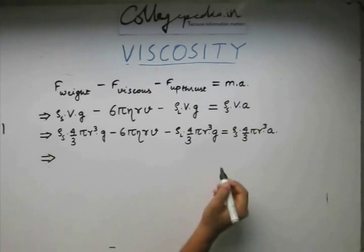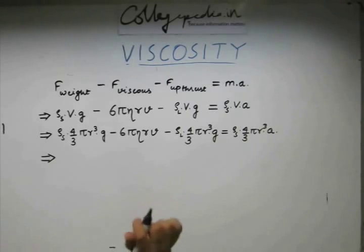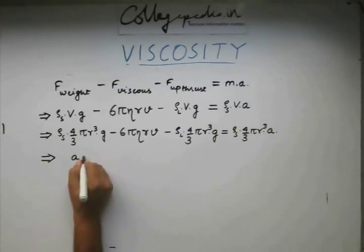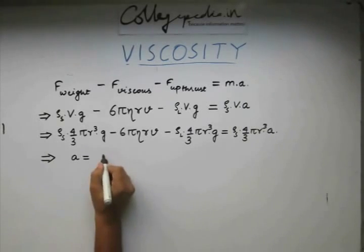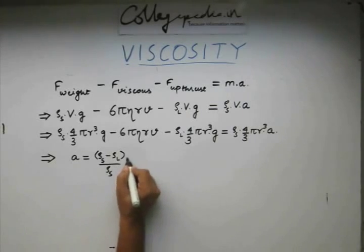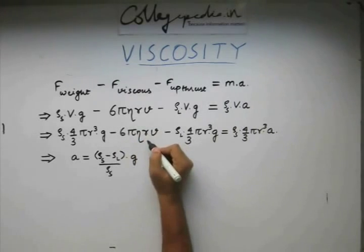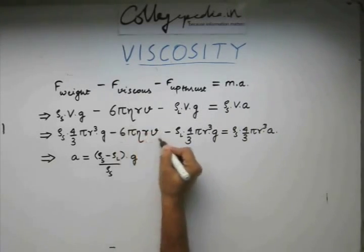Let us rearrange these terms so that we can achieve a formula for acceleration. a is going to be equal to (ρs - ρl) divided by ρs into g. If you remember, this was the kind of formula we obtained when we were deriving equations for the upthrust. However, here we will have another extra term which is due to the viscosity. We will have this extra term.